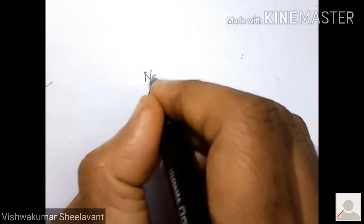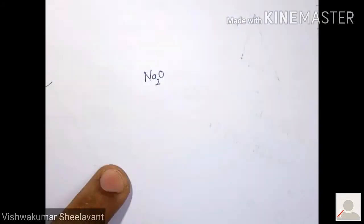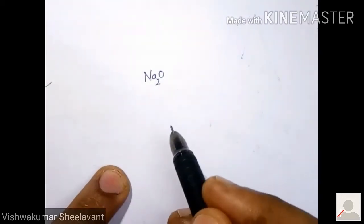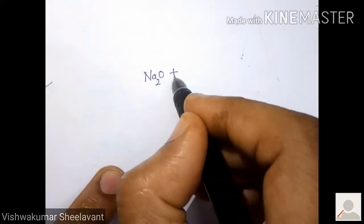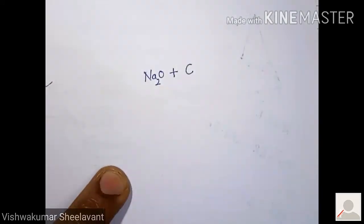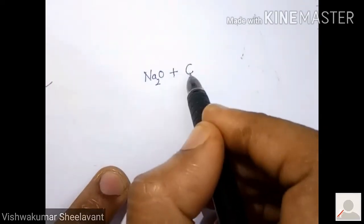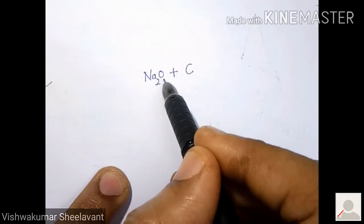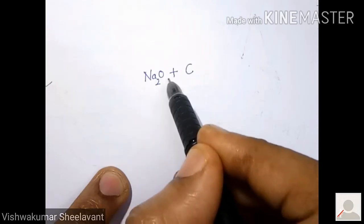Say for example, I am having Na2O. Sodium is having high affinity for oxygen. With this, if you put coke to react, sodium will never react with coke because the affinity of sodium for oxygen is very high.